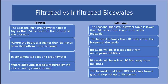You can install an infiltrated bioswale if the following conditions are present: the seasonal high groundwater table is lower than 24 inches from the bottom of the bioswale — you can check by augering down 24+ inches for standing water. Bedrock should be lower than 18 inches from the bottom. The bioswale will be at least 5 feet from underground utilities, at least 10 feet from your building, and at least 100 feet away from a ground slope of 30%.